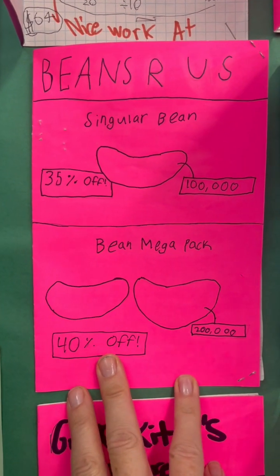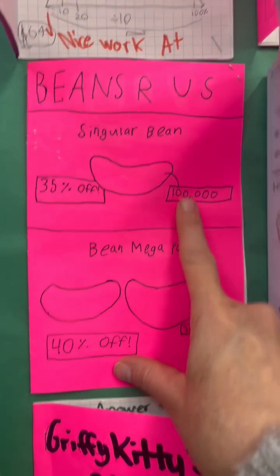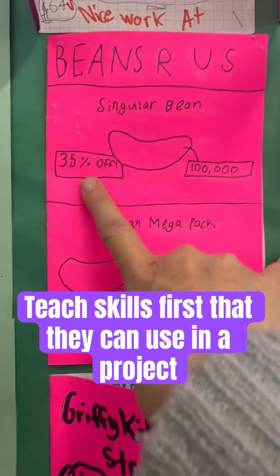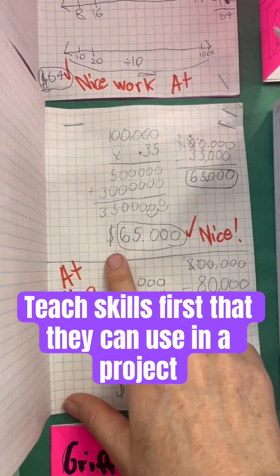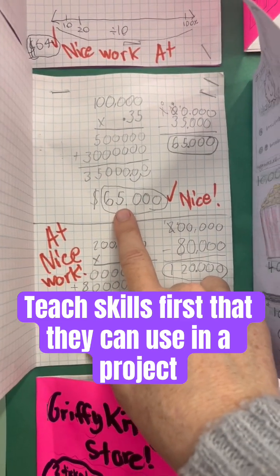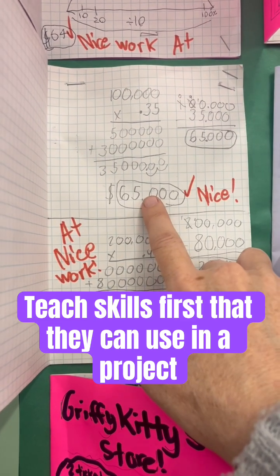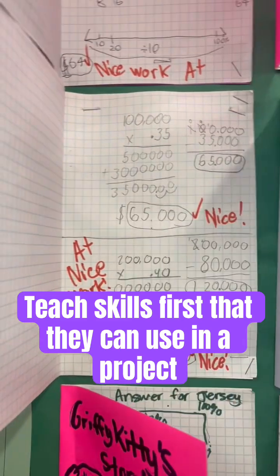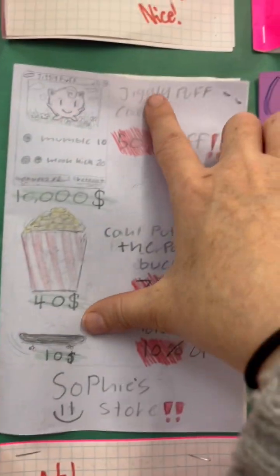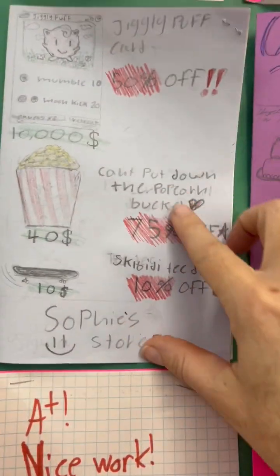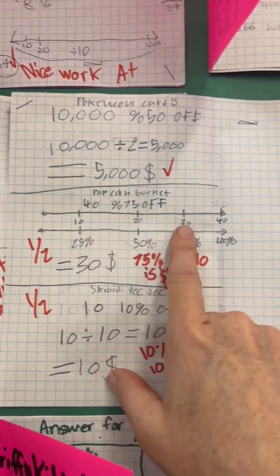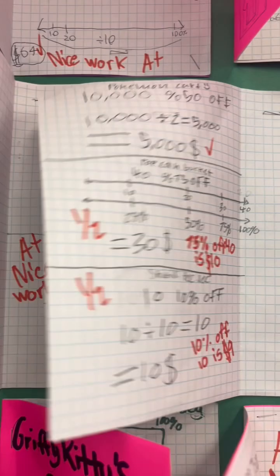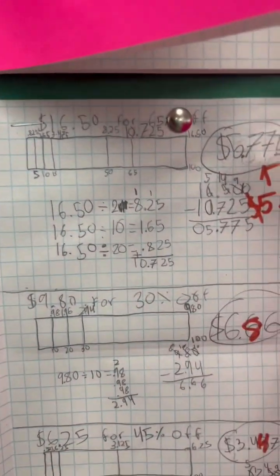This student made a bean store. They have the cost of the bean, they want to be super creative, and a percent off. As you can see, the student used the traditional algorithm to find how much the bean would cost after the percent off. Then I have another student here — they made a Jigglypuff card store, and they used a double number line.